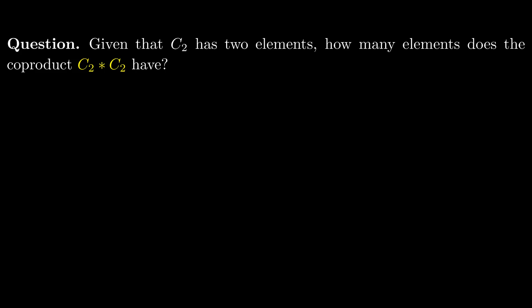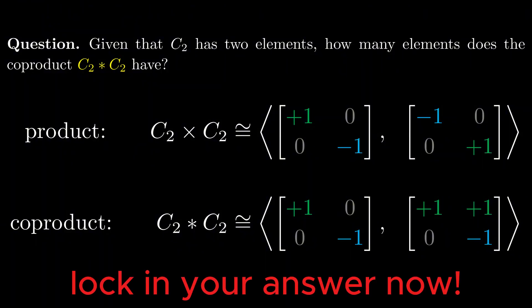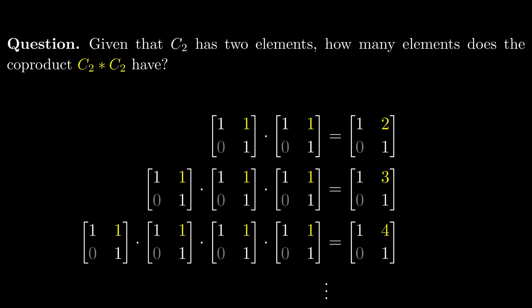Need a hint? Here are matrix generators for the categorical product, and matrix generators for the categorical coproduct. If you multiply the two generators of the coproduct together, you get a diagonal of 1s, as well as a 1 on the top right corner. If you take this matrix and multiply it with itself N times, you get a diagonal of 1s, and an N on the top right corner. Since all of these products are different, the correct answer is E, infinitely many elements.